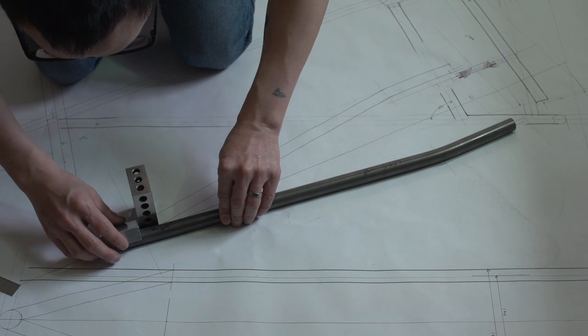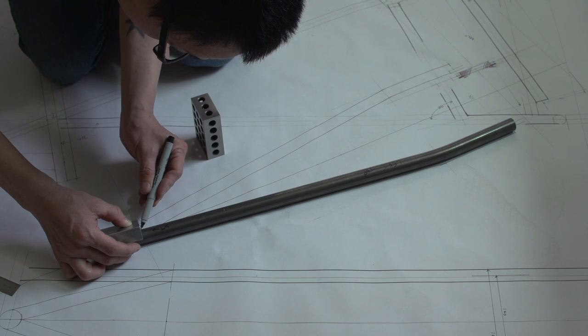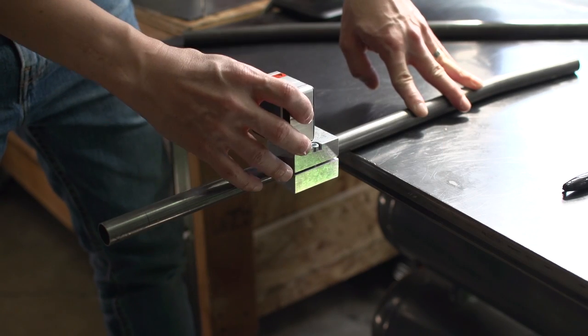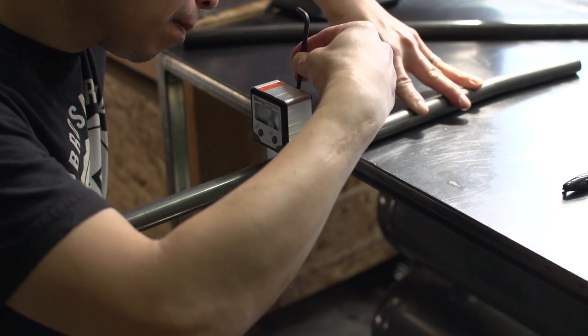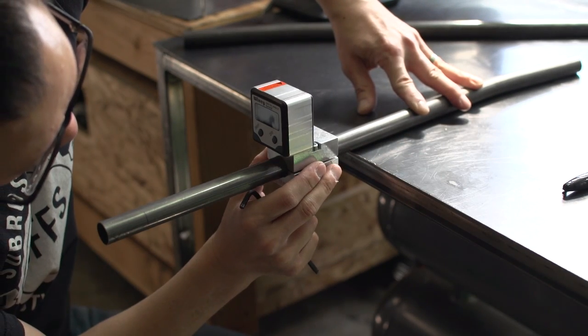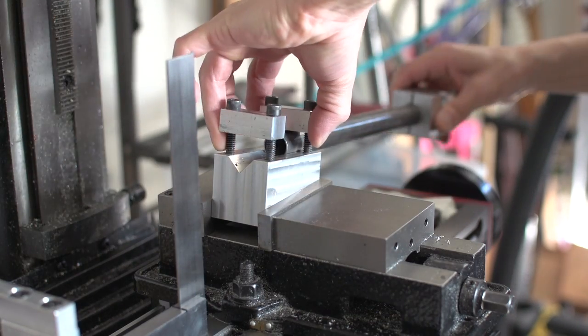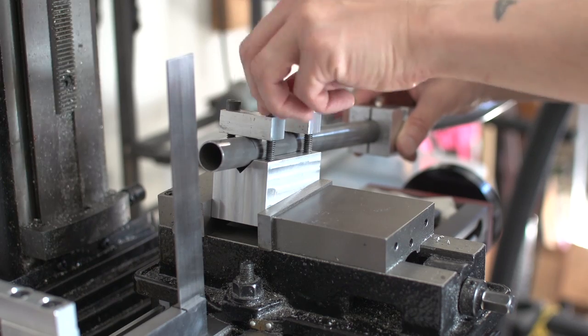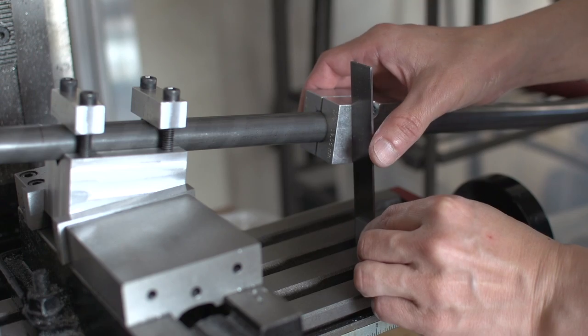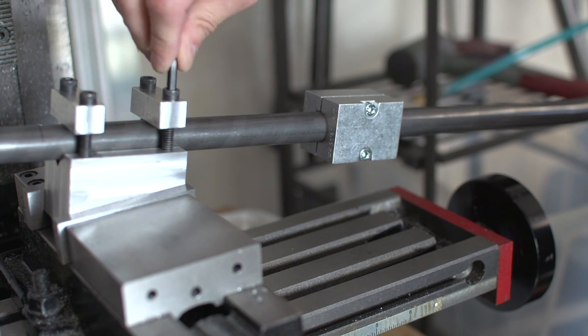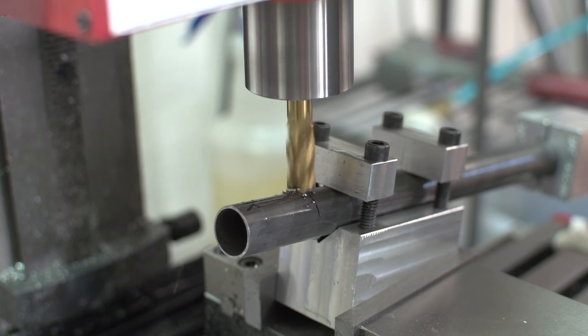Okay, so now I'm marking where I need to make cuts. And I'm using a Paragon Machine Works tube block to index the tube's rotation. So you can see I'm putting the machinist square up against it, and that's how I know it's the proper rotation.